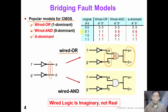For example, suppose that original signals A and B are 0 and 1. After the wire-OR model, signal A would be changed to 1. Similarly, if the original input is 1 and 0, then B would be changed to 1. This is why the wire-OR model is also called the one-dominant fault model.